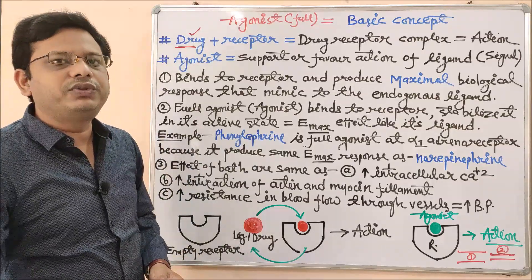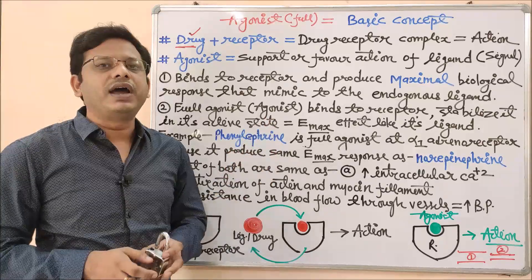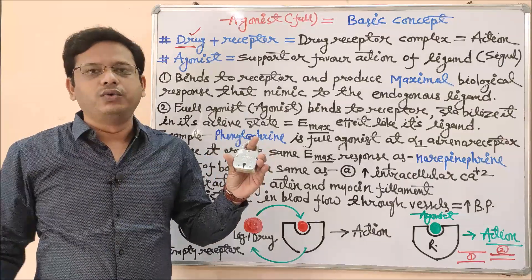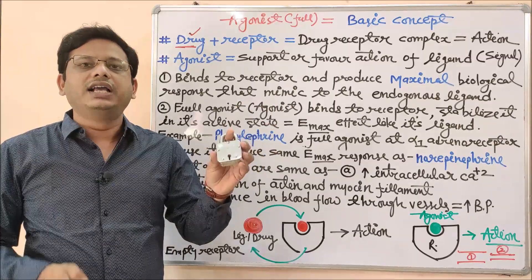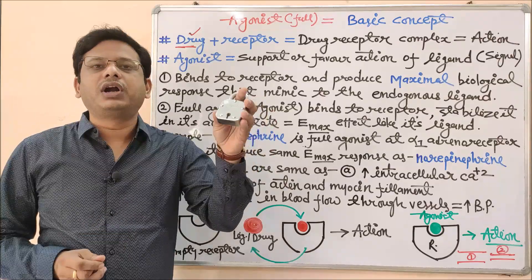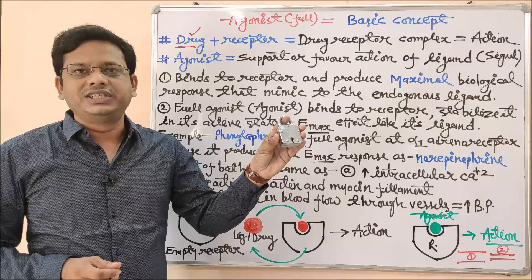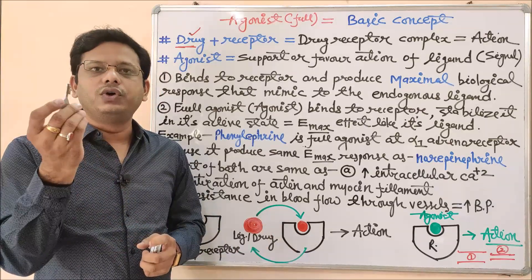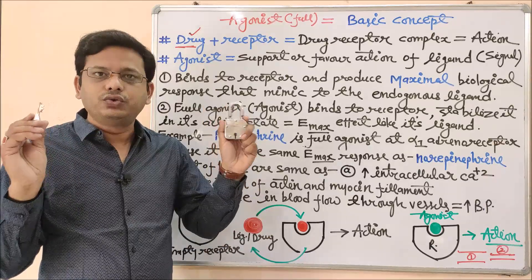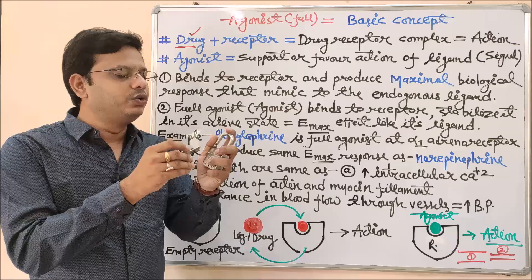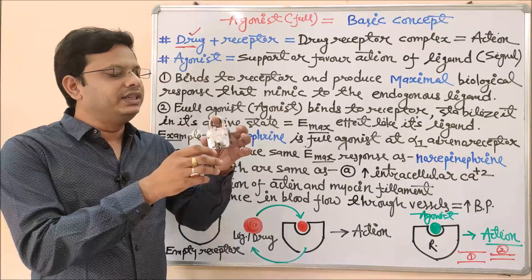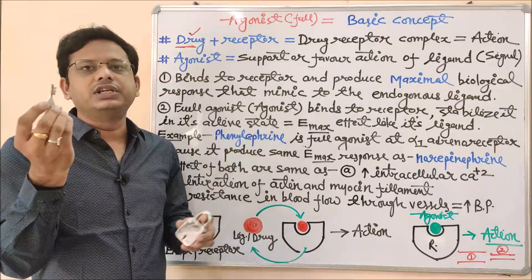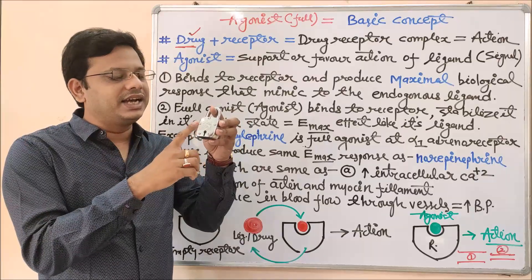Let me explain with the lock and key theory, which you have already studied in 10th or 12th class. Suppose this is a lock and this is a key — if I throw the key away, is the lock useful? No one will purchase it. Similarly, if I throw the lock and only have a key, no one will use that key either. These two are only valuable when they are together. In this case, the lock is working as a receptor and the key is working as a ligand — or in today's topic, as an agonist.